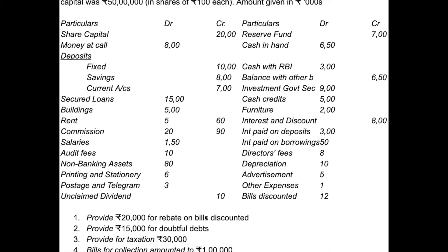Additional information: provide 20,000 for rebates on bills discounted. Rebates on bills discounted is income earned in advance, so that is a liability — it goes under other liabilities and provisions. Interest earned is Schedule 13. Provision for doubtful debts of 15,000 is adjusted in the balance sheet and profit and loss. Provision for taxation goes under other liabilities and provisions in the income statement. Bills for collection amounting to 1 lakh go in the balance sheet as a footnote. Acceptance and endorsements on behalf of customers are contingent liabilities, Schedule 12.